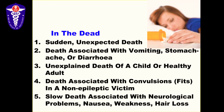Death associated with vomiting, stomach ache, or diarrhea; unexplained death of a child or healthy adult where you don't expect that person to die — these are situations which should arouse suspicion. Death associated with convulsions in a non-epileptic victim is important: if somebody suddenly develops convulsions and frothing at the mouth you have to suspect exposure to some poisonous substance. A slow death associated with neurological problems, nausea, weakness, or hair loss — obtainable from the history — are all things to look for in a case of suspected poisoning.